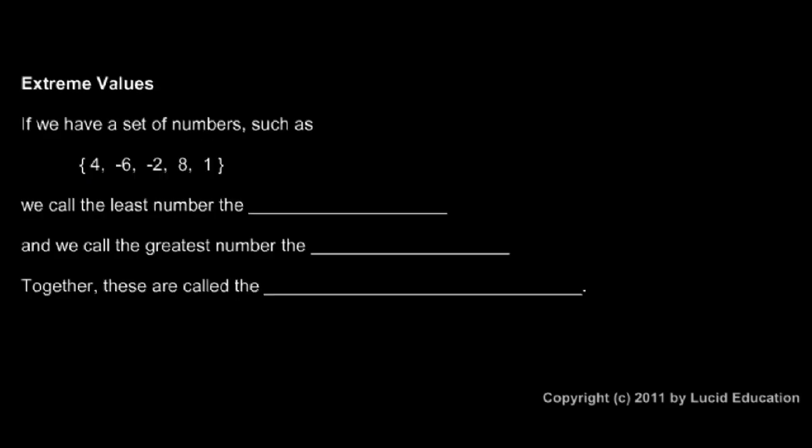And now we'll say a little bit about extreme values. Look at this set of numbers, and you see again here the set notation with the curly brackets there. We have a set of numbers. We call the least number the minimum, and the greatest number the maximum.